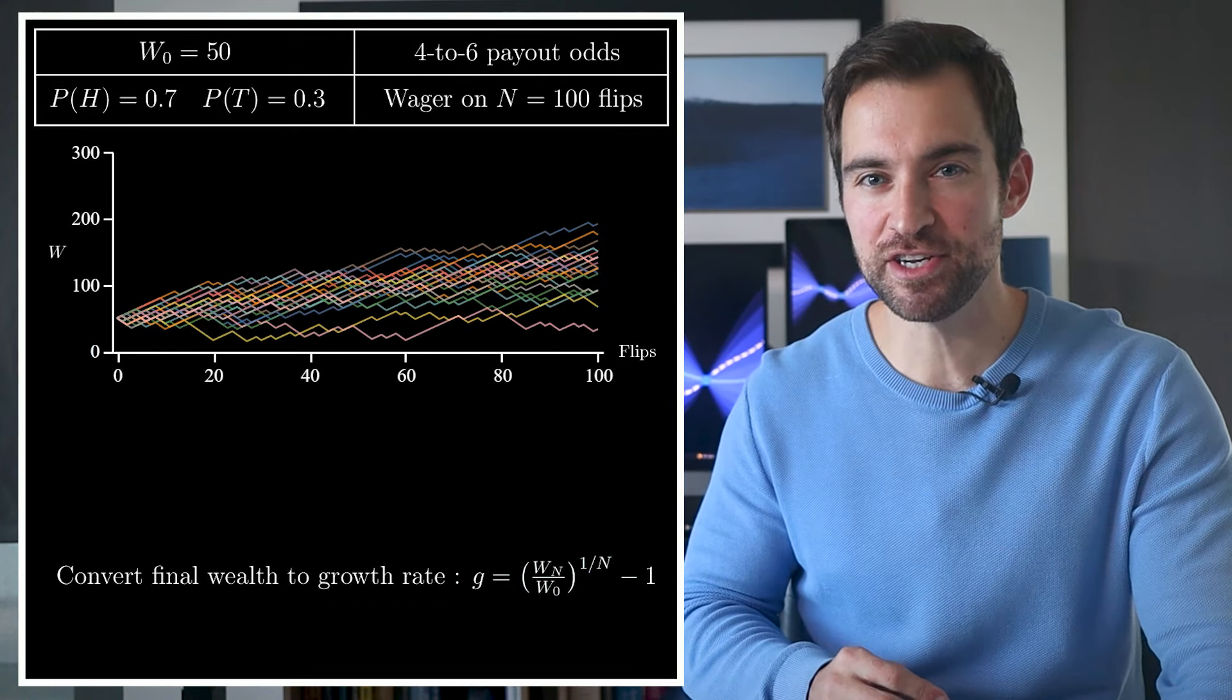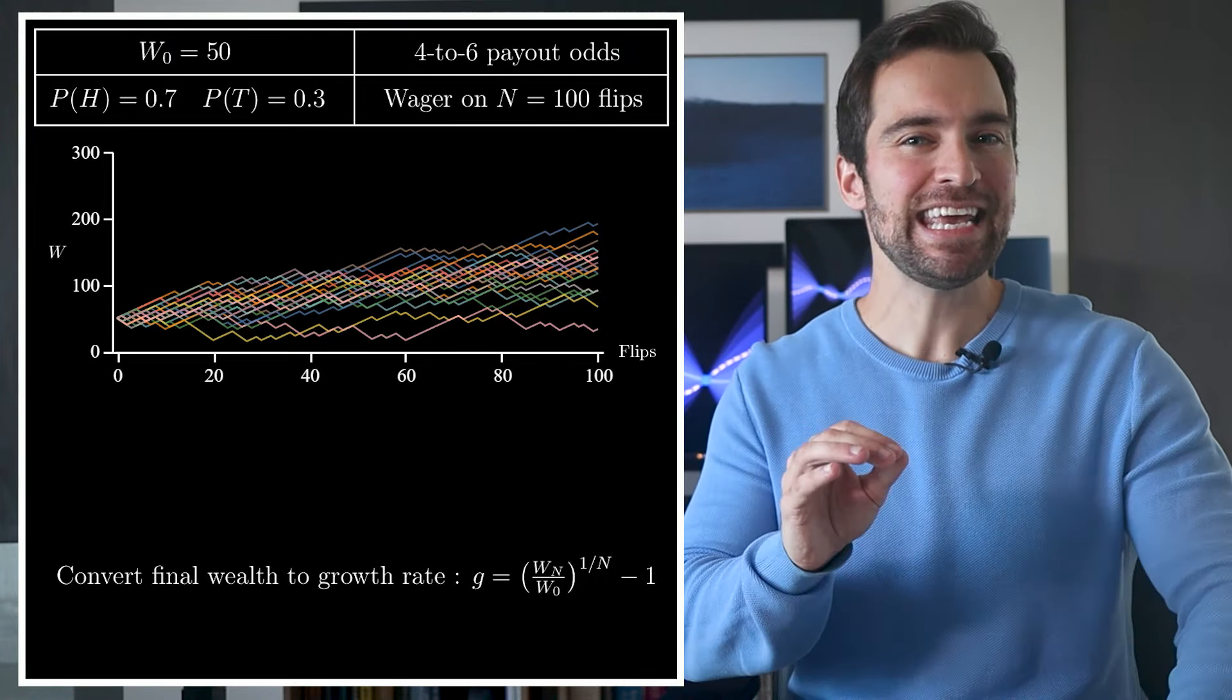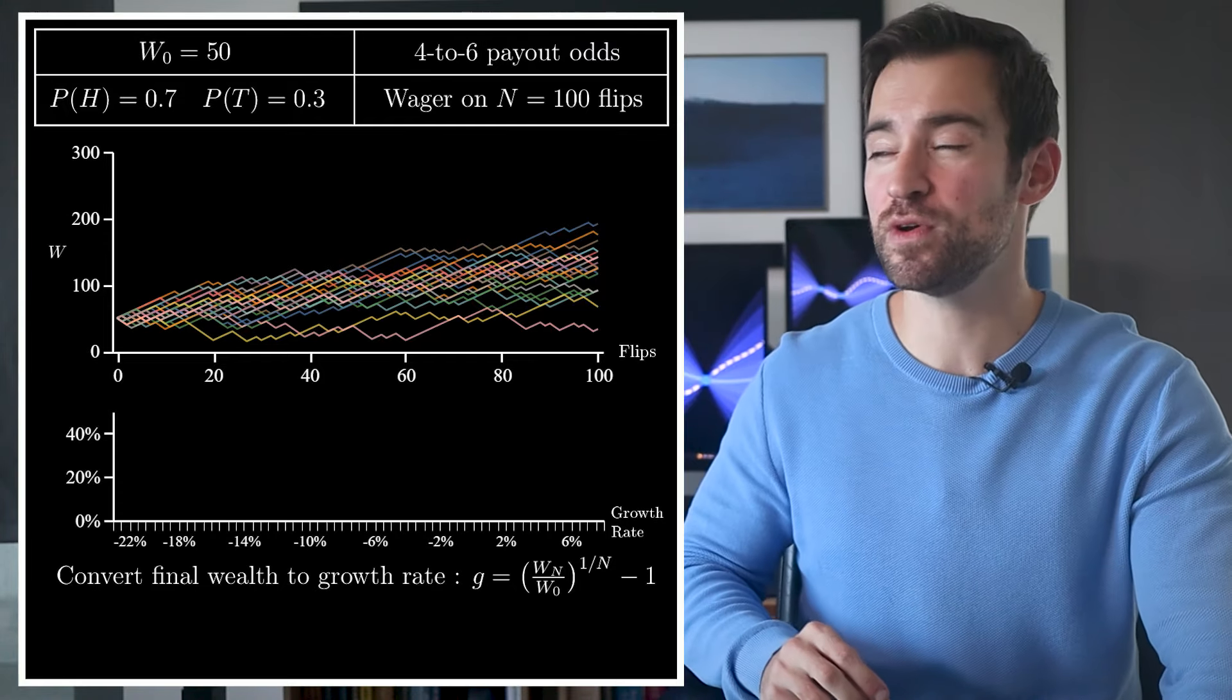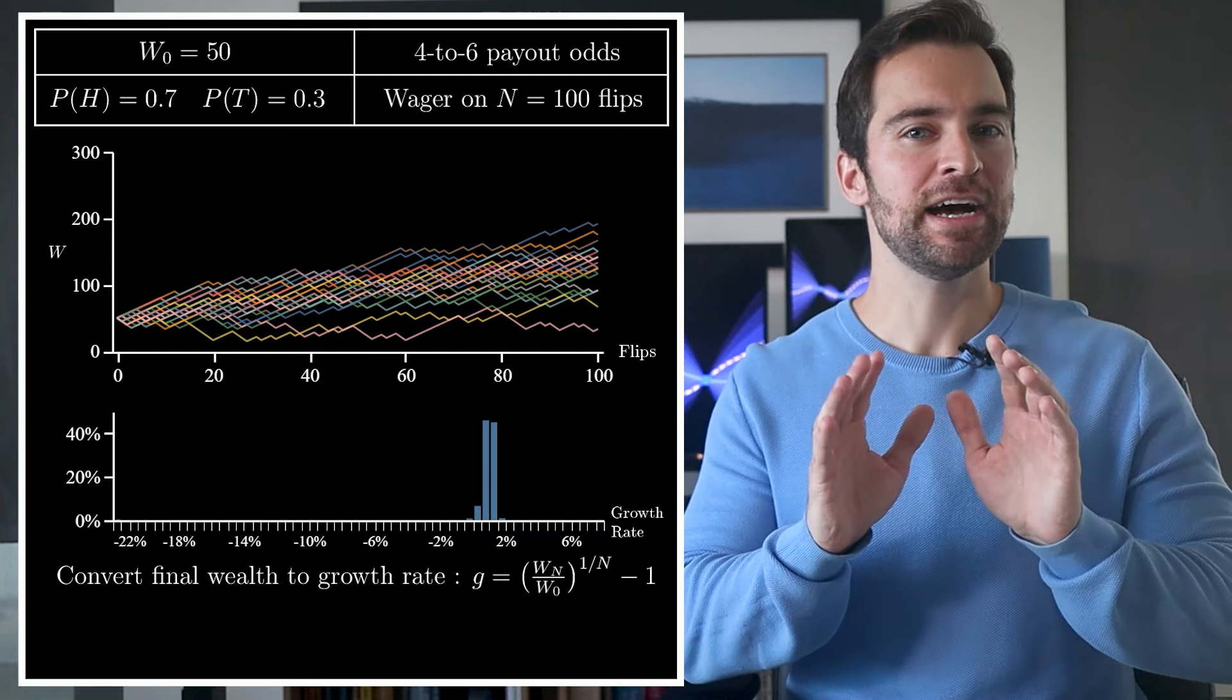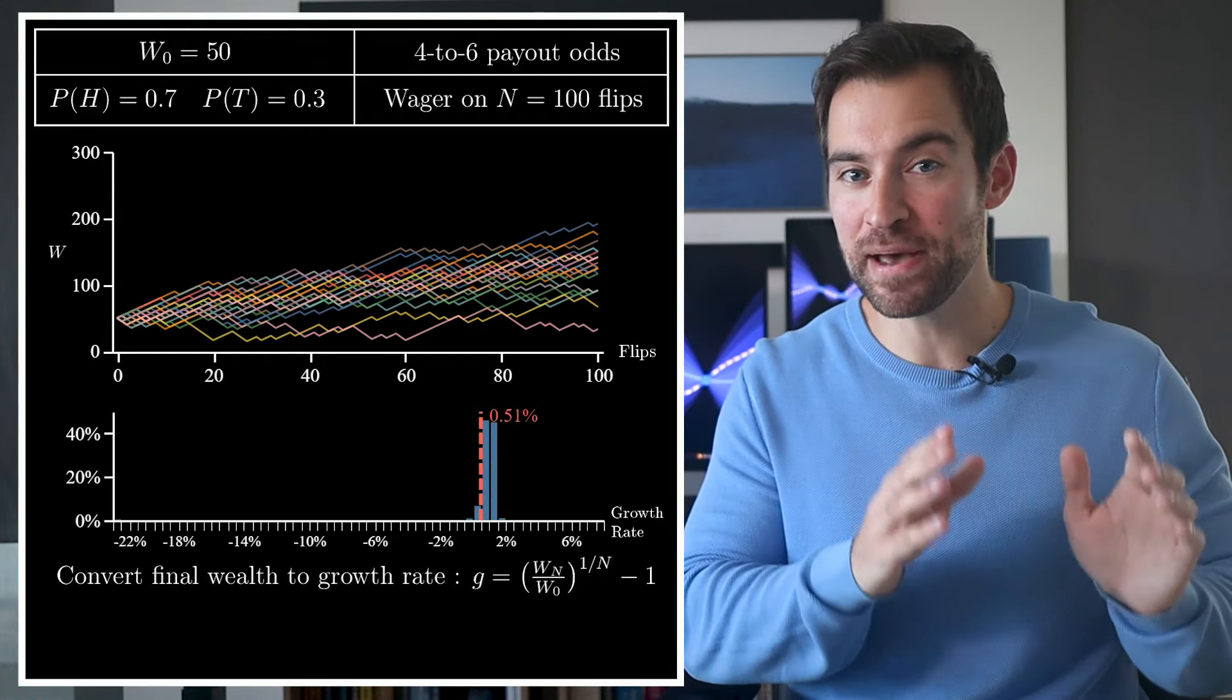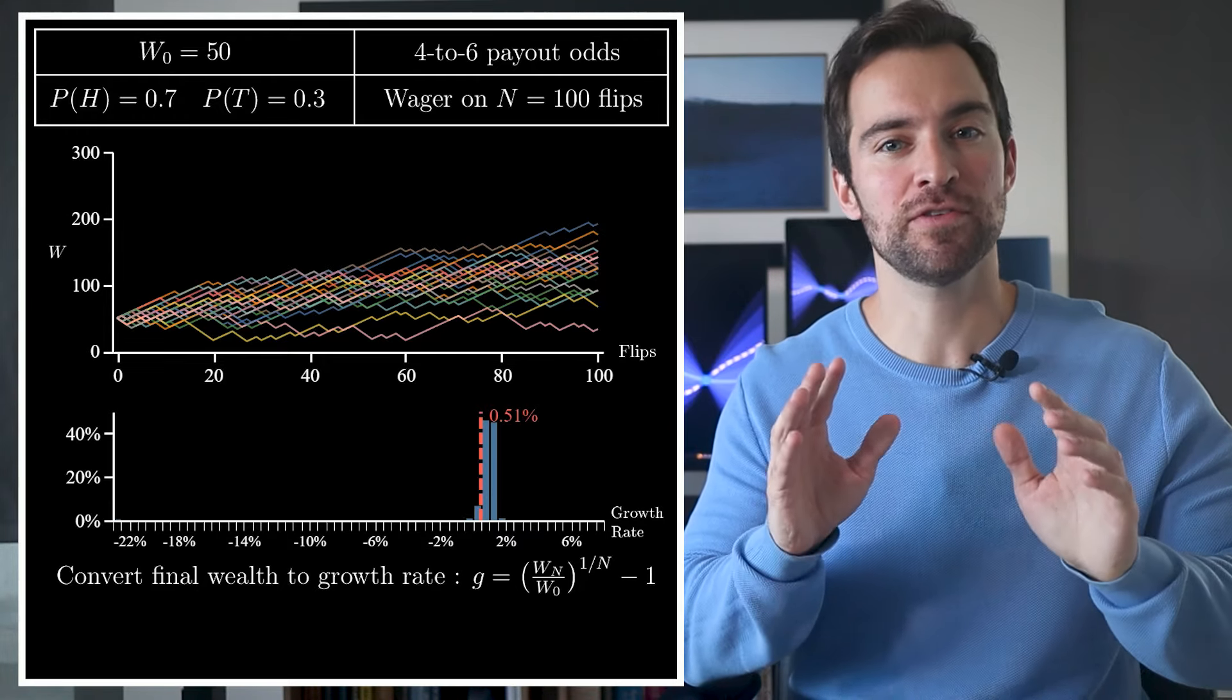Now, a particular strategy, like our bet 5 always strategy, gives us a range of growth rates in the end, each with their own probability of being realized. We can plot those growth rates along this horizontal axis, along with their simulated probabilities according to this strategy. Finally, the Kelly Criterion demands we evaluate a strategy by the average growth rate. For the bet 5 always strategy, the average growth rate is roughly half a percent,